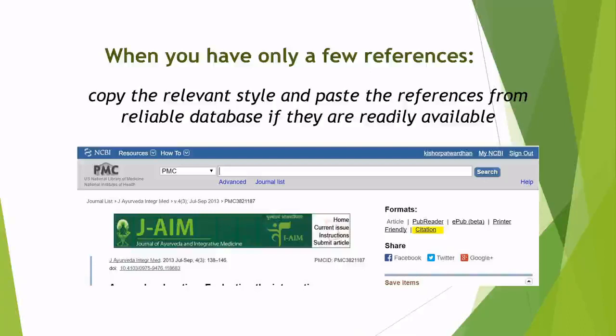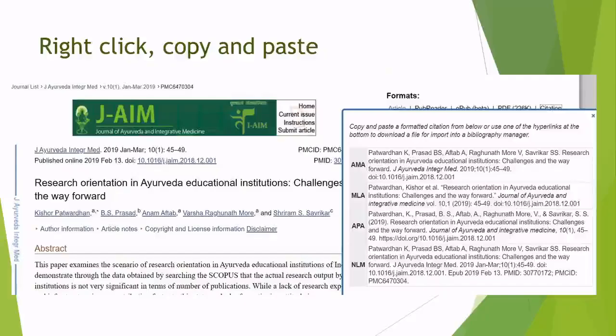When you have only a few references — maybe 10 or 15 — the recommendation is to copy references wherever they are available in standard format. For example, if you are using PubMed, PubMed Central gives you an option for citations in four styles already provided. You just right-click, copy, and paste under the reference section. This is easiest, but only practical for a limited number of references.